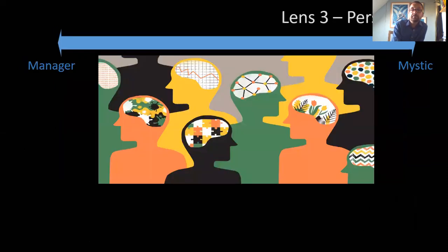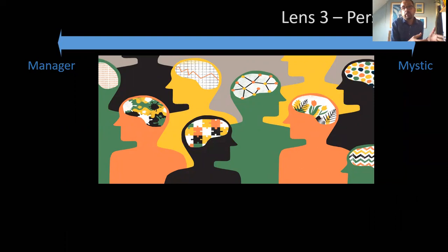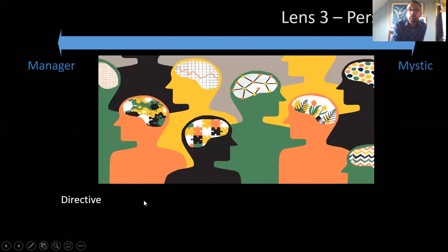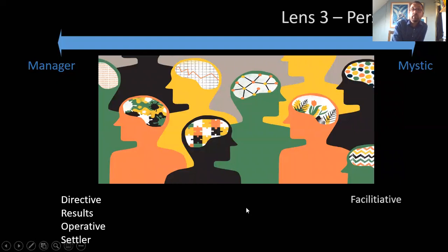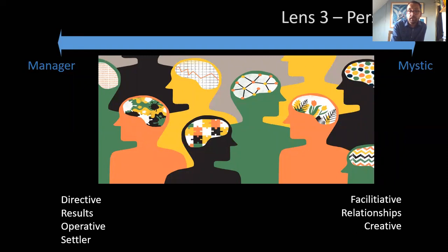The third lens is the lens of personality. On a broad spectrum there are those who like to be managers — who like structure and knowing where they are — and those who embrace much more of a mystic kind of personality, open to doubt, questions, and uncertainty. Managers tend to be more directive, driven by results, liking operations and systems, preferring things to stay as they are. Whereas the mystic is much more facilitative, happy to work with a whole range of people, driven more by relationships than results, more on the creative side, and probably more of a nomad — willing to see where the Spirit takes them and not rooted to one place for any length of time.